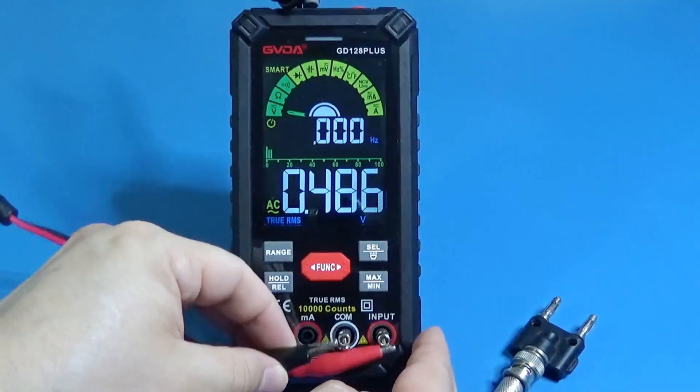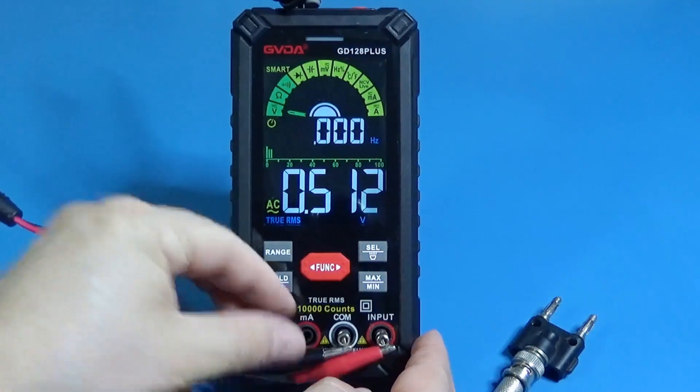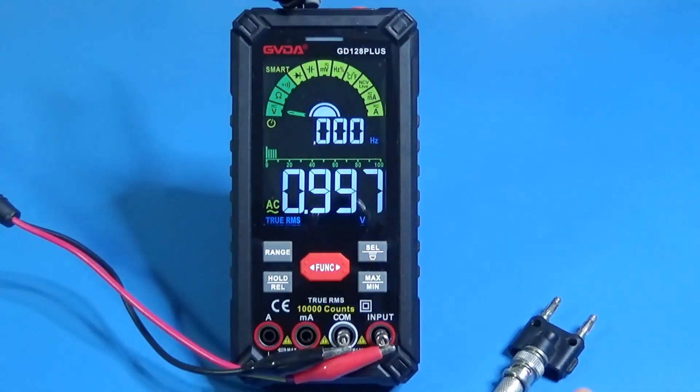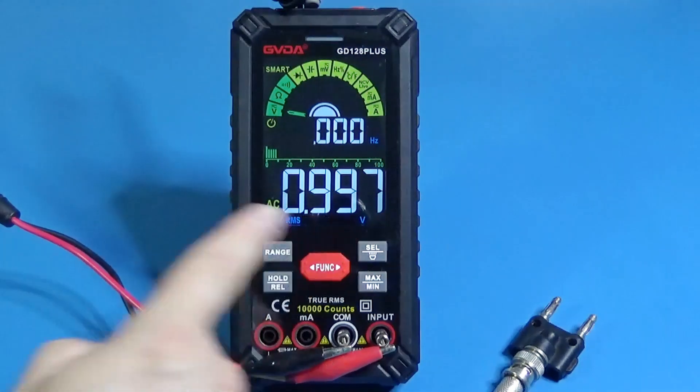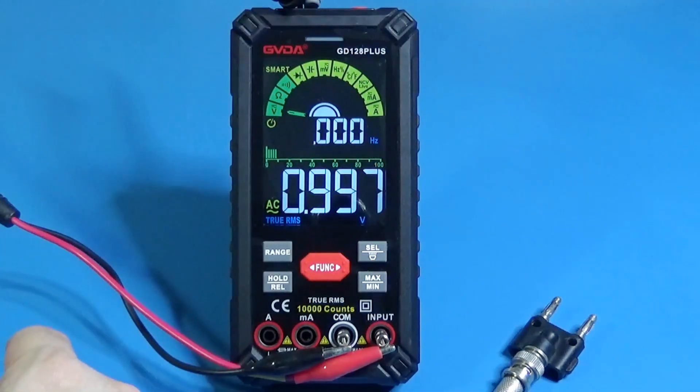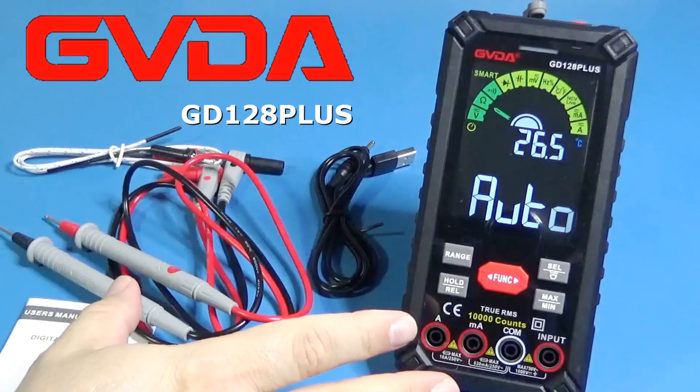I am in the smart function and I'm applying one volt RMS at one kilohertz. And it's okay, the measurement is on the specifications for the true RMS. I like it a lot.